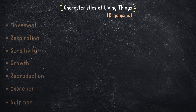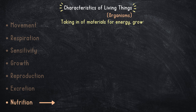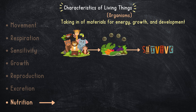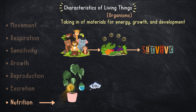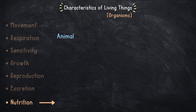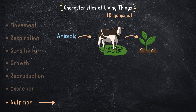Finally, the last characteristic on our list is nutrition, which is the taking in of materials for energy, growth, and development. All living organisms need nutrients to survive. Plants, for instance, absorb sunlight, water, and carbon dioxide to make their food through a process called photosynthesis. Animals, like cows, eat plants or other animals to gain energy.